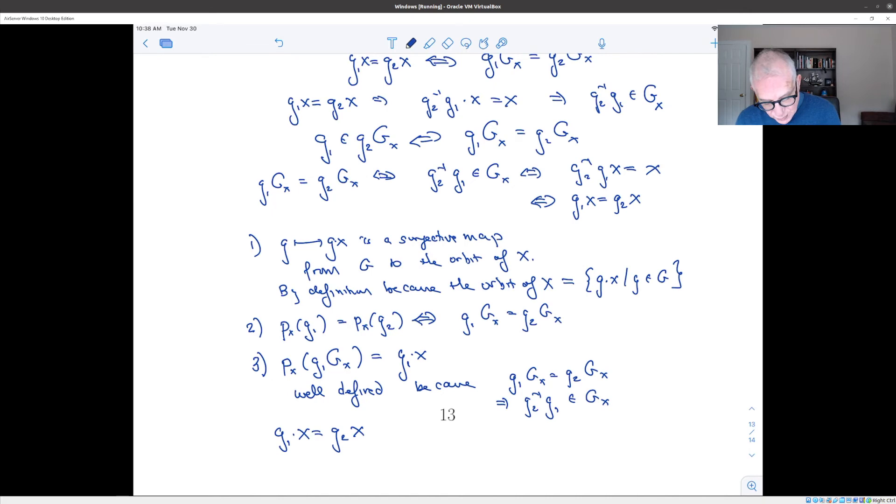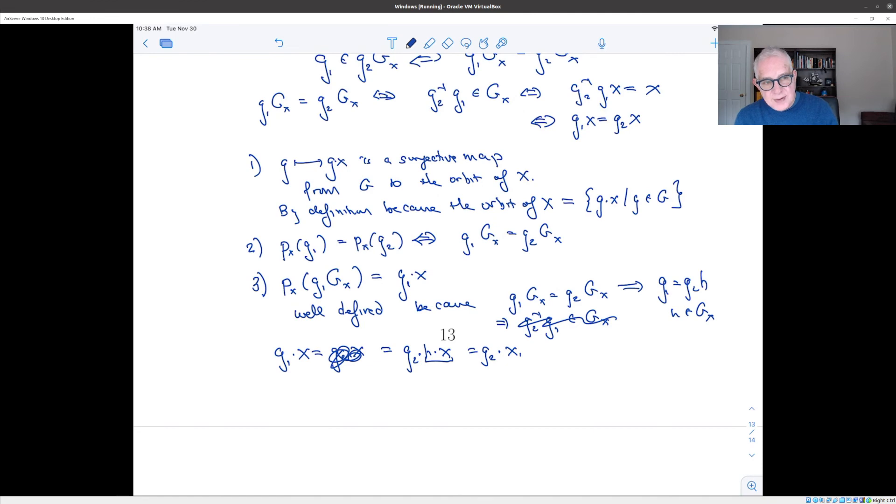Maybe a simpler way to do this would just be to say, if this is the case, then that means that G1 is G2·H for some element of the stabilizer. And therefore, G1·x is G2·H·x. But H·x is x. So that's G2·x. So we've shown actually that the map from G to the orbit of x can really be thought of as a map from the cosets of the stabilizer to the orbit of x. And it's injective because we already know that P_x(G1·G_x) equals P_x(G2·G_x) if and only if G1·x equals G2·x, which is if and only if G1·G_x equals G2·G_x.